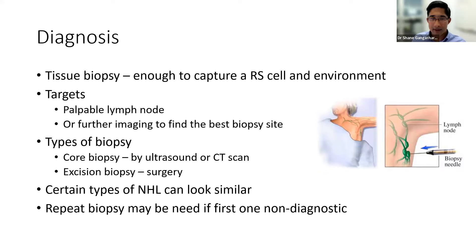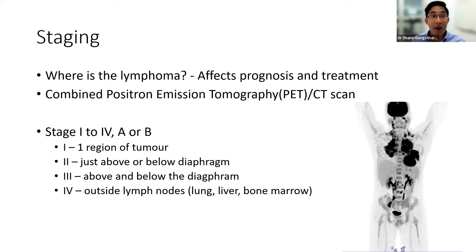We've confirmed a Hodgkin lymphoma — now what? We want to find out where the lymphoma is, which we call staging. That's important because it affects what sort of treatment we give, how much treatment, and the prognosis — what outcomes we expect.